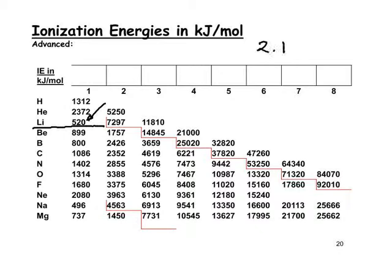Looking at lithium: removing the first electron comes from energy level 2, but if you try to remove another electron from the lithium ion — which has the configuration simply 1s² — you're removing from energy level 1, and it takes an awful lot more energy. So you see the jump there. If you go to beryllium, atomic number 4, configuration 2.2, removing the third electron takes much more energy because you're going into another energy level that's full.